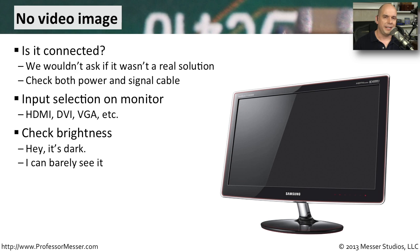If the monitor is getting a signal but it's very dark or hard to see anything, then maybe it's simply the brightness setting. You can use the brightness controls on the monitor to turn the brightness up so that you get that backlight shining through and can see exactly what's being displayed.